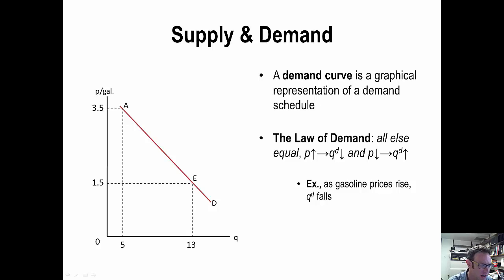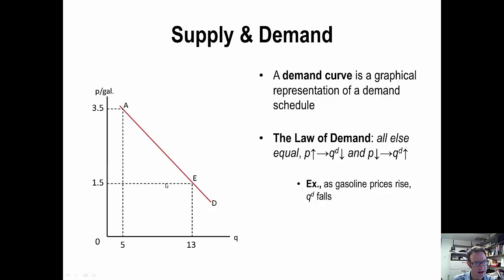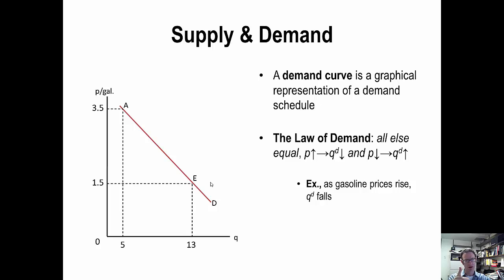This all translates into the law of demand, which is fundamental — you have to know this. As prices go up, say from $1.50 to $3.50, quantity demanded declines, in this case from 13 down to 5. Conversely, if prices fall from $3.50 to $1.50, quantity demanded rises from 5 to 13. So there is an inverse, negative relationship between price and quantity demanded: prices up, quantity demanded down; prices down, quantity demanded up.